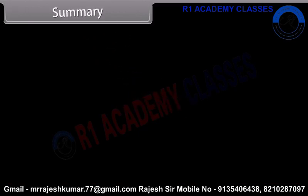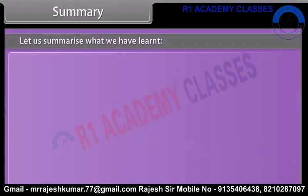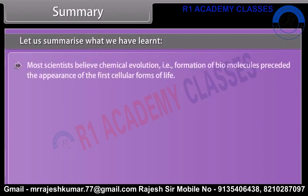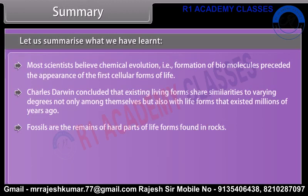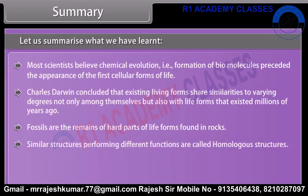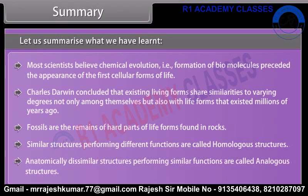Summary. Most scientists believe chemical evolution — that is, formation of biomolecules — preceded the appearance of the first cellular forms of life. Charles Darwin concluded that existing living forms share similarities to varying degrees, not only among themselves but also with life forms that existed millions of years ago. Fossils are the remains of hard parts of life forms found in rocks. Similar structures performing different functions are called homologous structures, while anatomically dissimilar structures performing similar functions are called analogous structures.